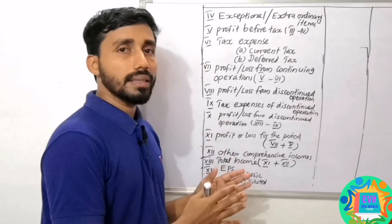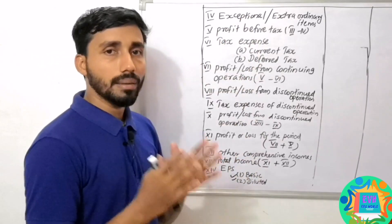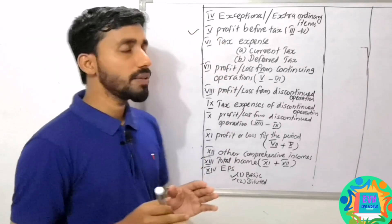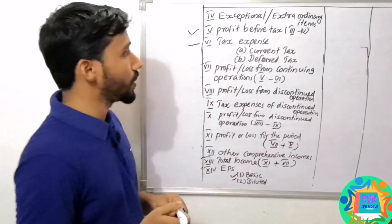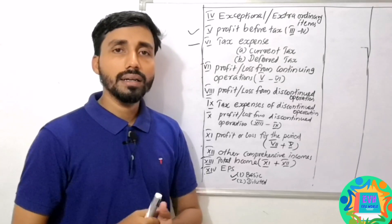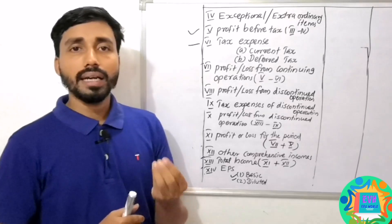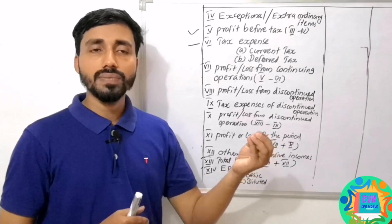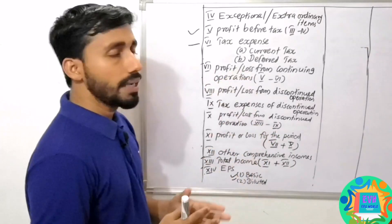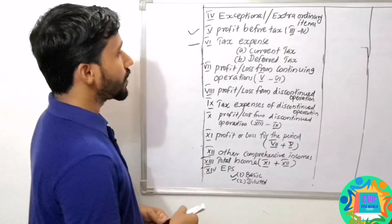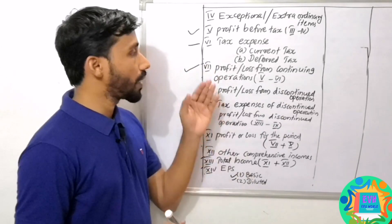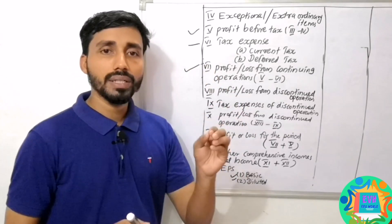That means we have a profit, and we minus here — that means Profit Before Tax. We then minus the tax, which includes deferred tax. Deferred tax means the difference between taxable income and reported income. That gives us the Profit or Loss from Continuing Operations.